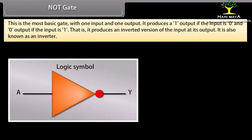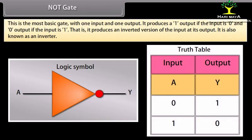NOT gate: This is the most basic gate, with one input and one output. It produces a 1 output if the input is 0, and a 0 output if the input is 1. It produces an inverted version of the input at its output and is also known as an inverter.